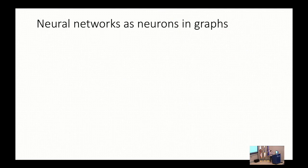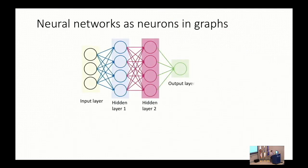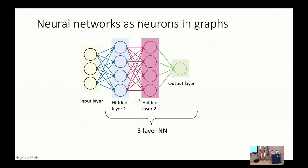Neural networks are just neurons arranged in a graph. Your inputs constitute the input layer. Depending on how many hidden layers you add, you're chaining more non-linearities, increasing the model's complexity. Your output layer is dictated by the inference task: for multi-class classification you might have multiple neurons corresponding to the number of classes; for regression you might have just one output number.